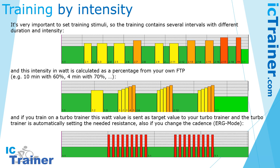It's also very easy, for example, to do a HIIT training where you ride very short but very hard intervals. For example, a 30-second interval with very high intensity and very high resistance, with a 30-second recovery phase in between. Your turbo trainer sets this resistance every time, and you simply follow the program.